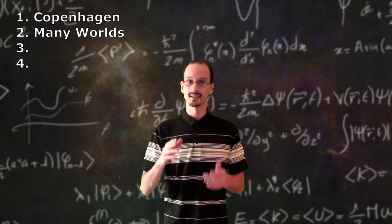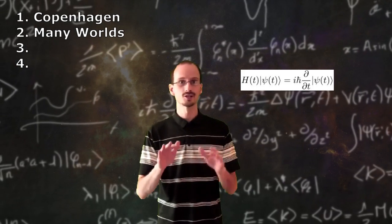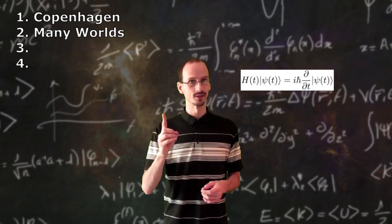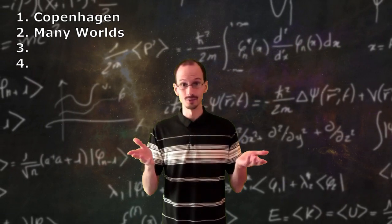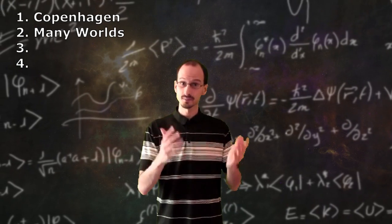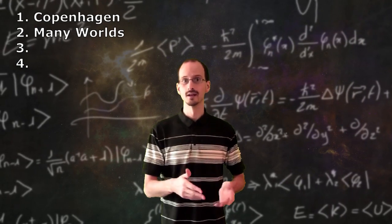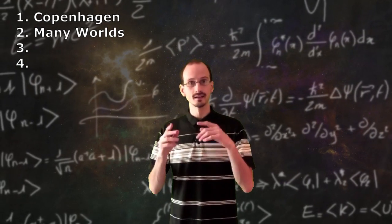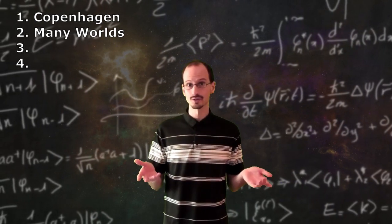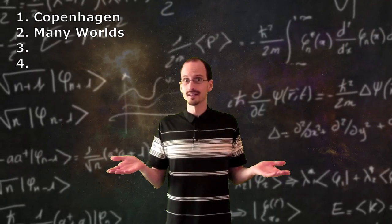The assumption is to suppose that the Schrodinger equation is the end of the story, and there's only one wave function, the wave function of the universe. Whereas Copenhagen says, let's take the results of the experiment to their ultimate conclusion, many worlds says, let's take the math to its ultimate conclusion. As far as Occam's razor is concerned, these are equally valid.